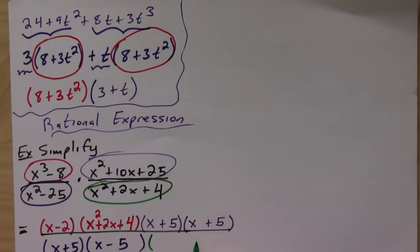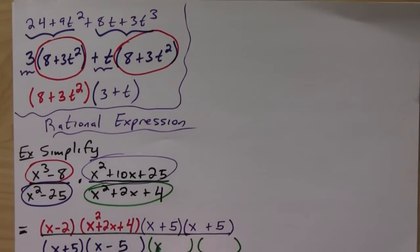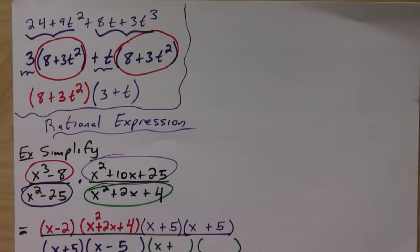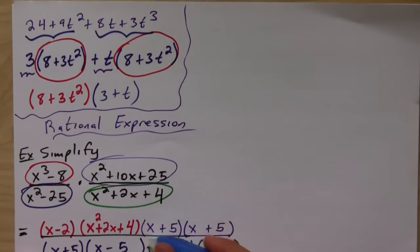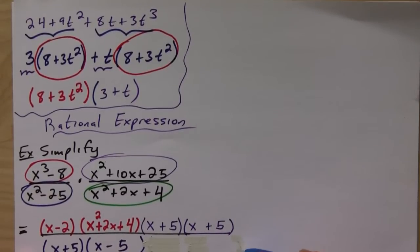...is also a trial and error, but again not a difficult one. This is going to be x...actually it's not a trial and error one. Notice that actually if you try this, x squared plus 2x plus 4 isn't factorable. Almost got me there.